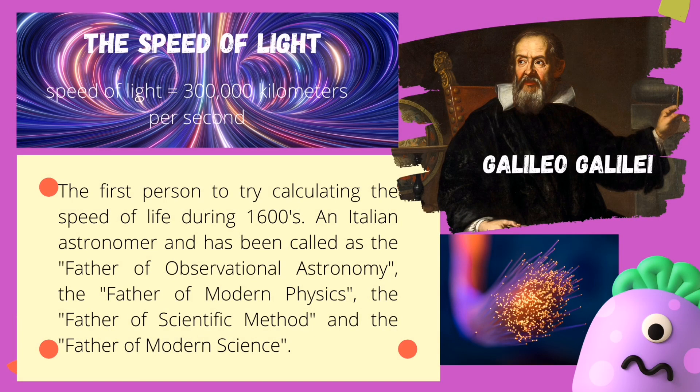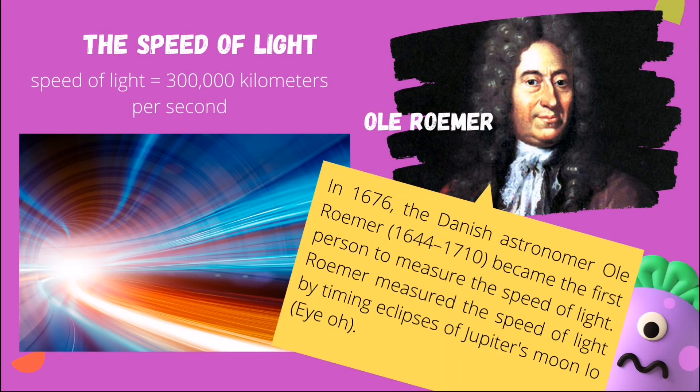Different scientists tried to measure the speed of light in the early 1600s. One of those was Galileo Galilei, an Italian astronomer named the father of observational astronomy, the father of modern physics, the father of scientific method, and the father of modern science. Though he failed to calculate the exact speed of light, one person successfully measured it 52 years after his death — Ole Rømer, a Danish astronomer, in 1676.